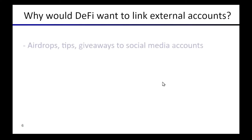Besides this airdrop example, there are several others. Something fairly closely related is the idea of tipping — where you want to send a cryptocurrency payment to the owner of a Twitter account, an Instagram account, or any website. The challenge is that they have this account, that's who you want to send it to, but they don't already have a cryptocurrency address linked to their account. The idea of tipping is that you should be able to send them money such that as soon as they can prove they've created an address and associated it with that account, they'll be able to claim it. This requires linking the external account into the smart contract context.